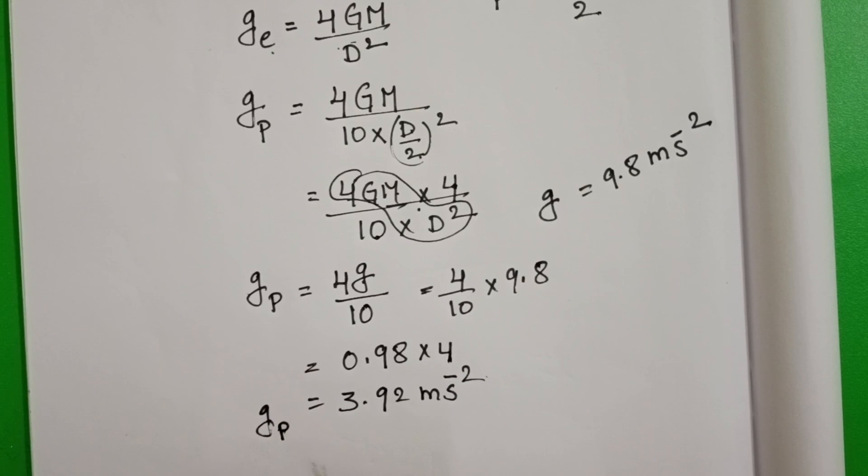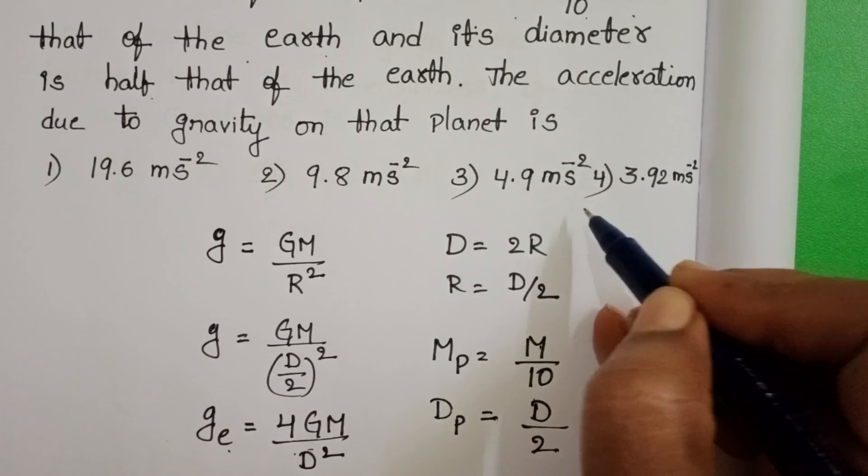So the acceleration due to gravity on the surface of the given planet is 3.92 meter per second square. Fourth option is correct.